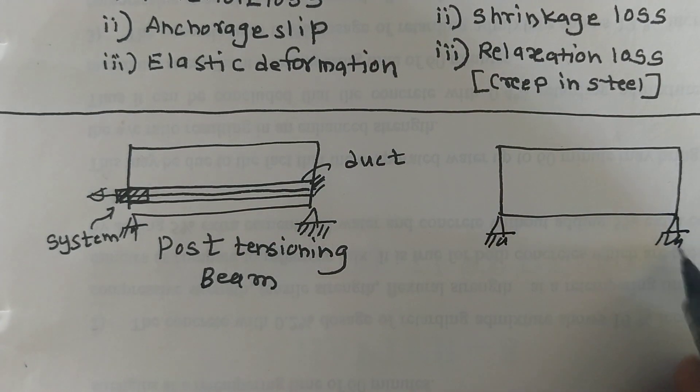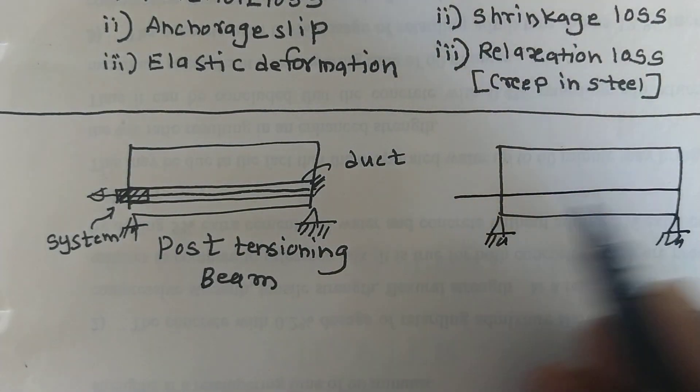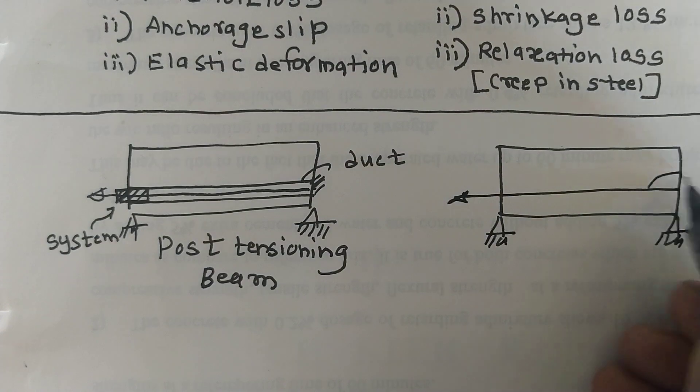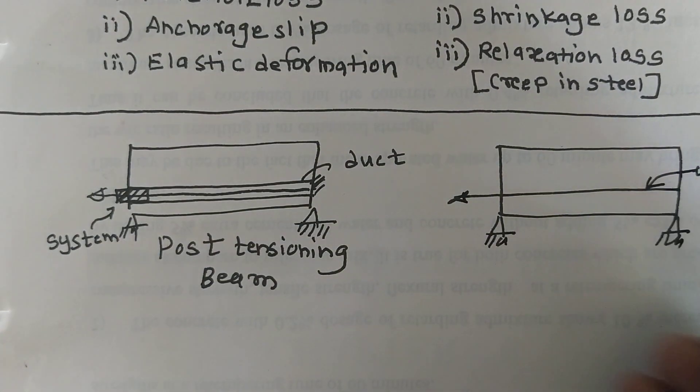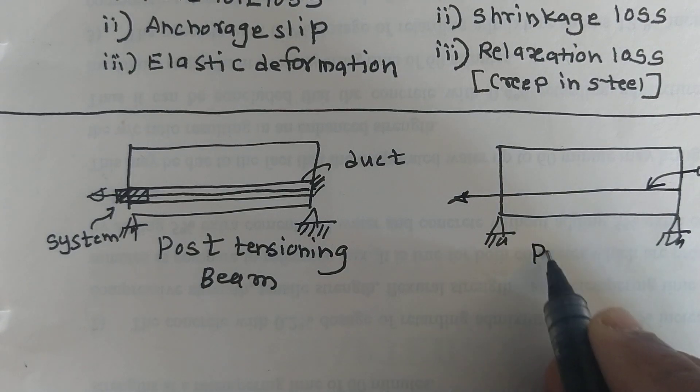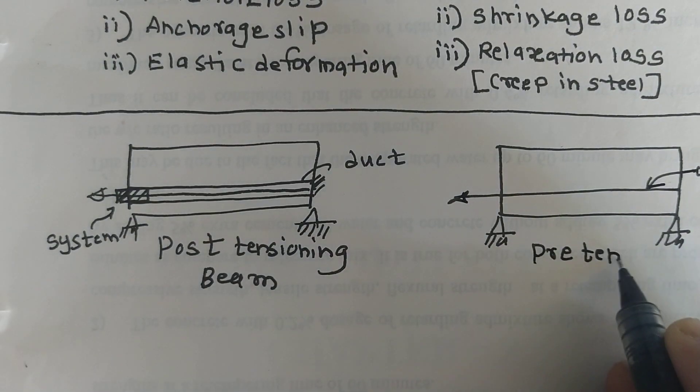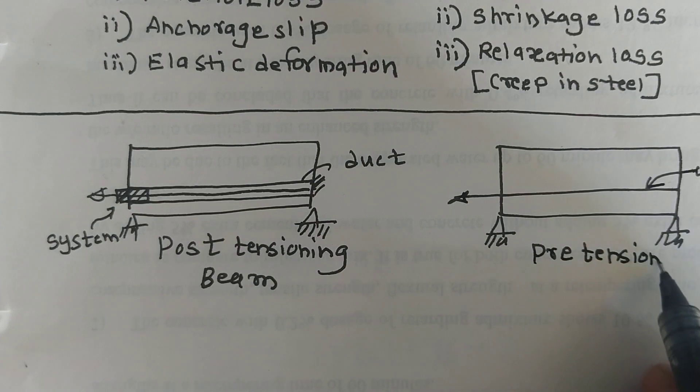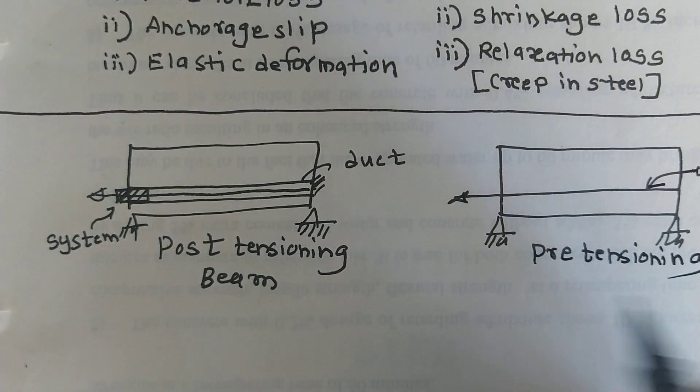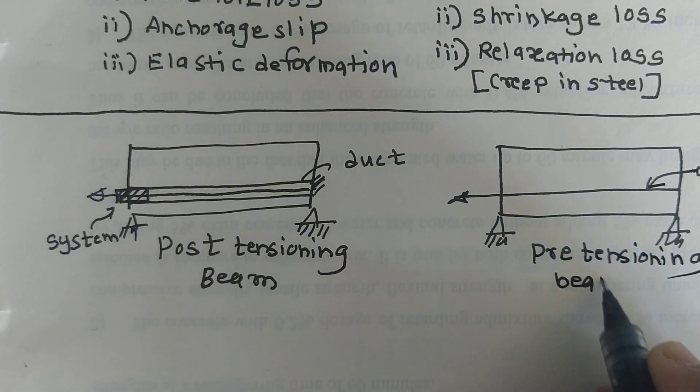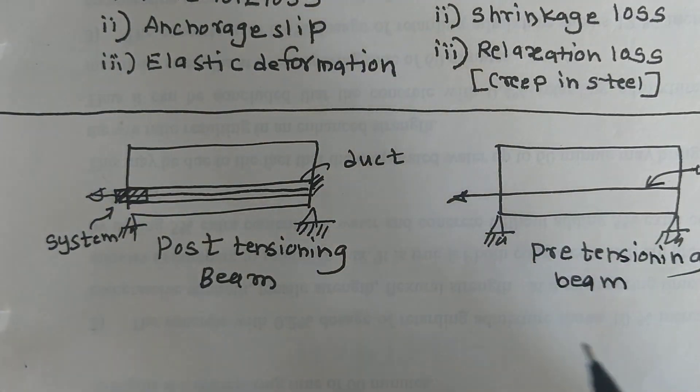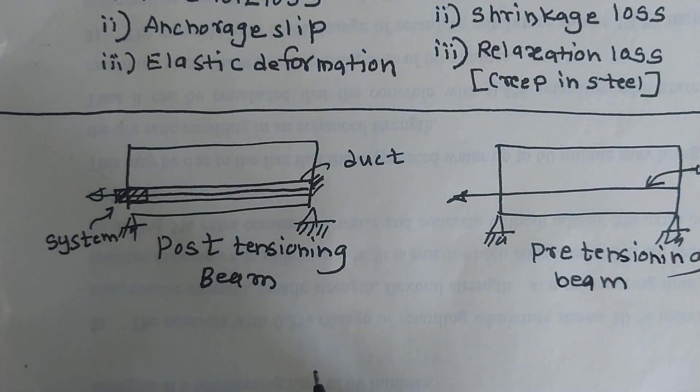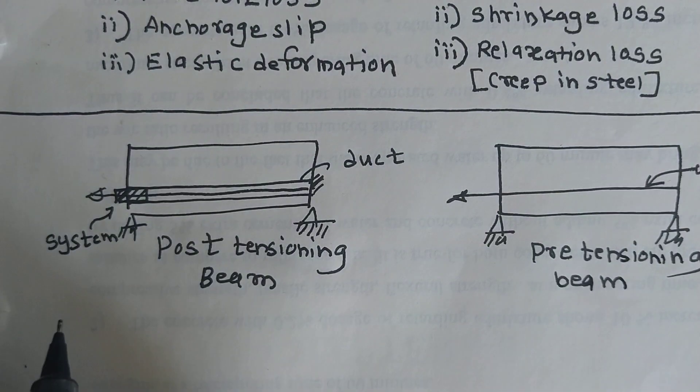And next one is pre-tensioning beam. Only wire is provided, this is called pre-tensioning beam. So let us list out the total losses related to the post-tensioning and pre-tensioning.